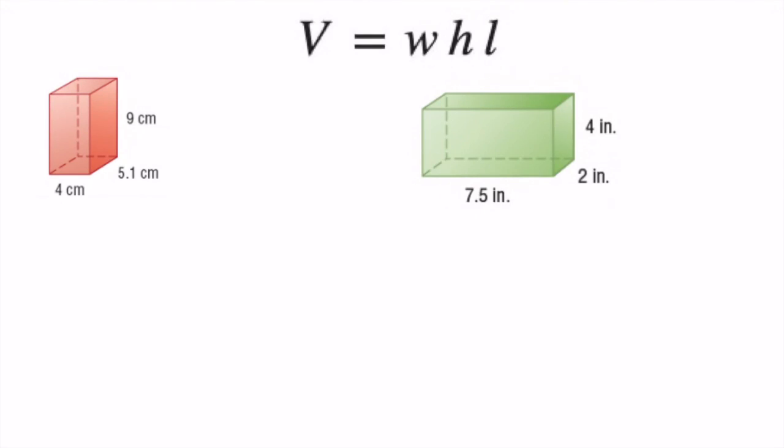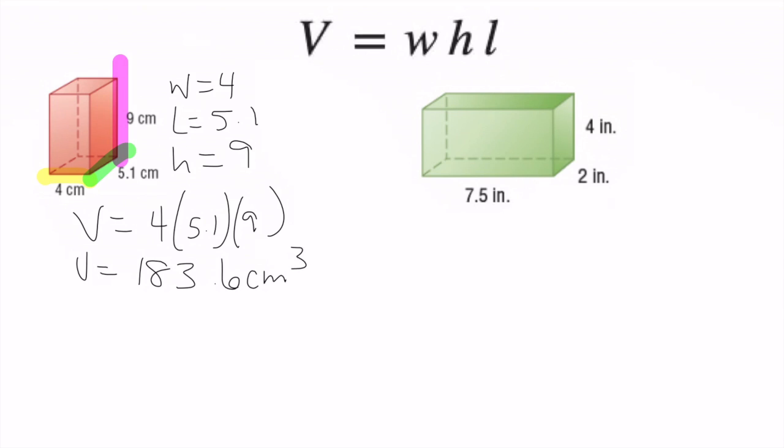Alright so let's try these. So you had to identify your width, your height, and your length. So we have a width, a length, we have a height. So width equals 4, length equals 5.1, height equals 9. So this volume is 4 times 5.1 times 9. You should have gotten 183.6 centimeters cubed.